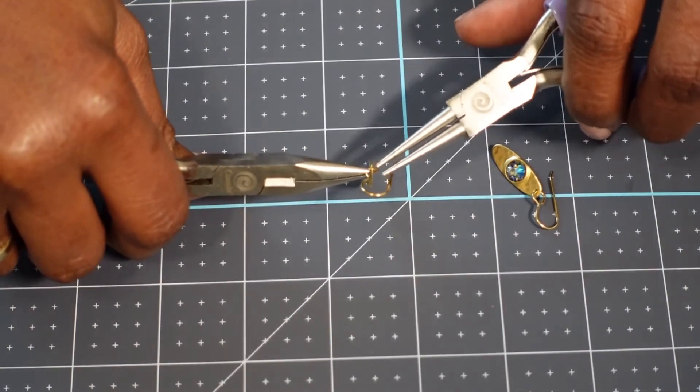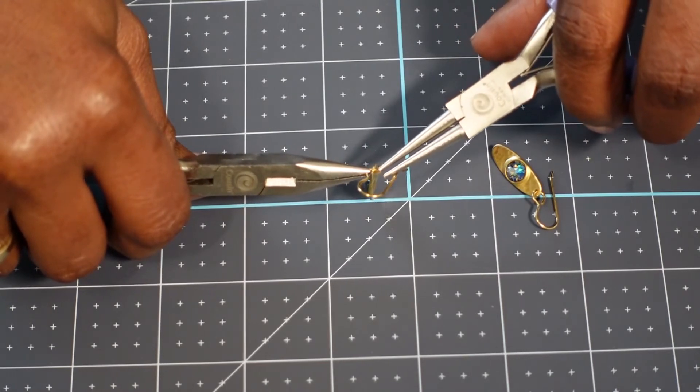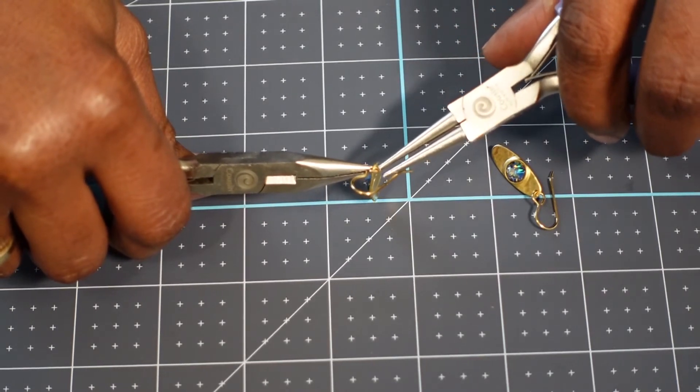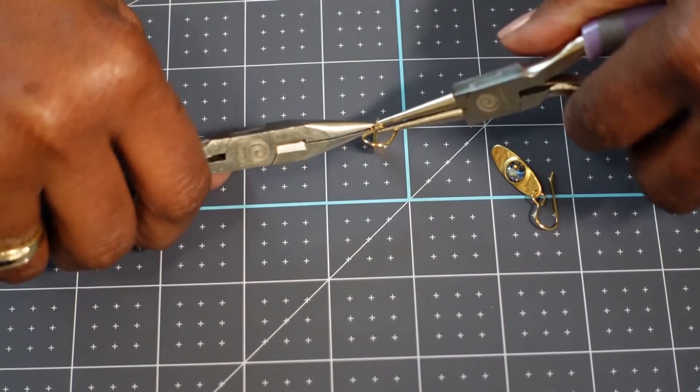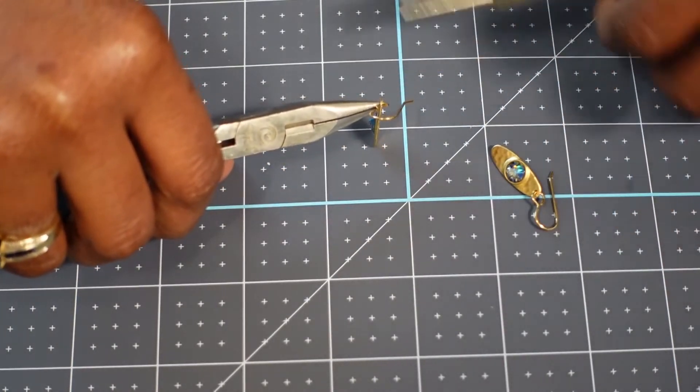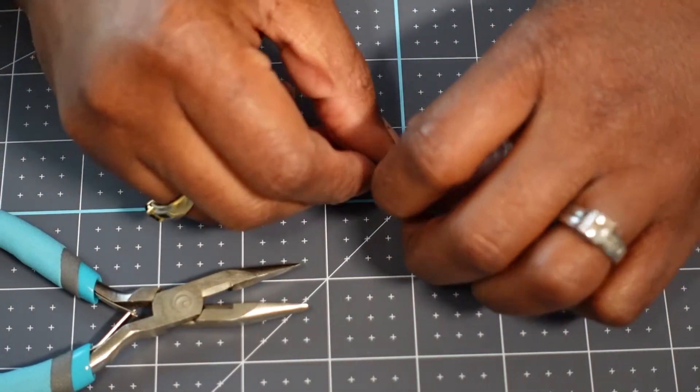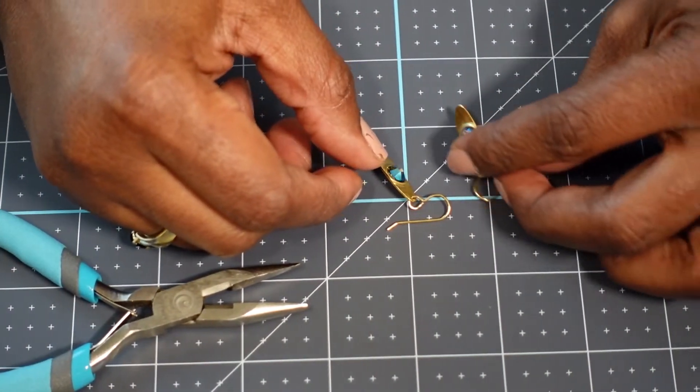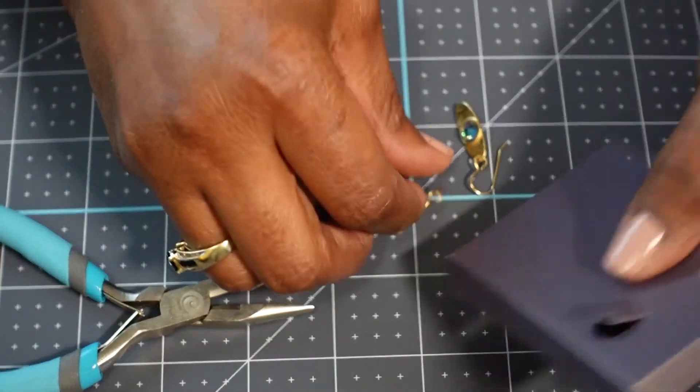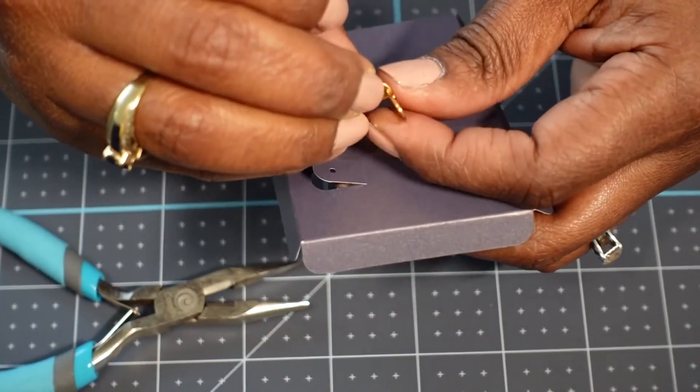And then I'm going to take my pliers and I'm going to close it up. And that's it. That's literally all you have to do in order to make a gorgeous pair of earrings. And so I'm going to put them on my little backer.